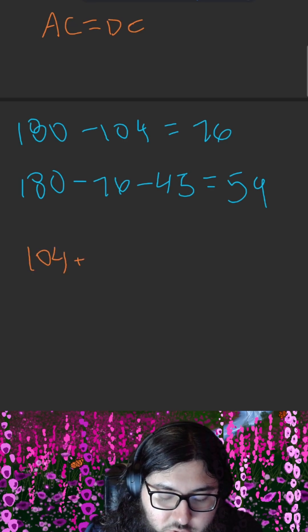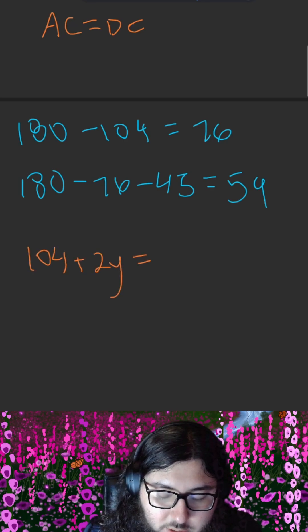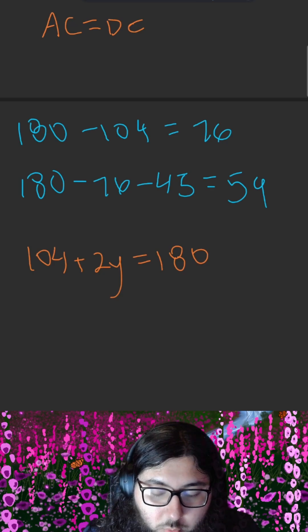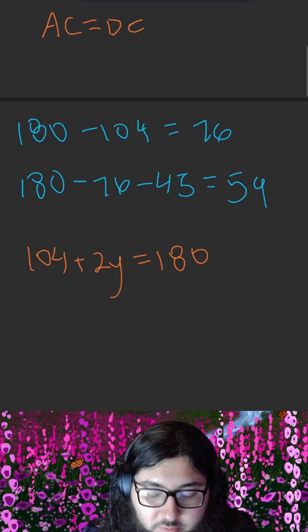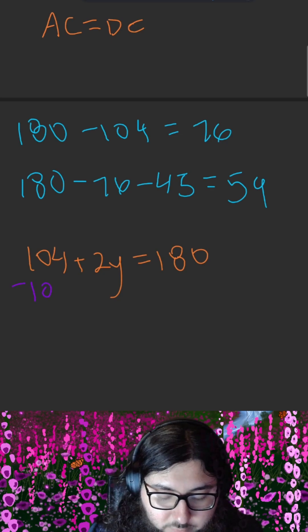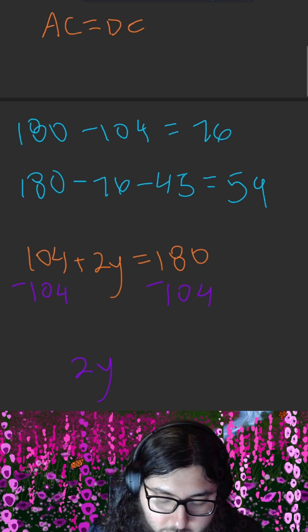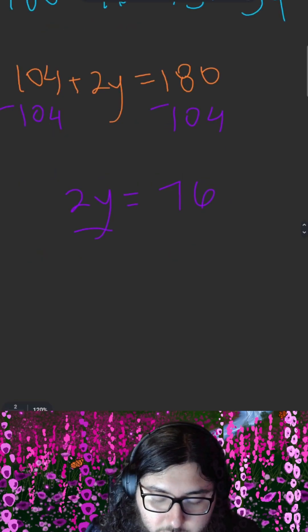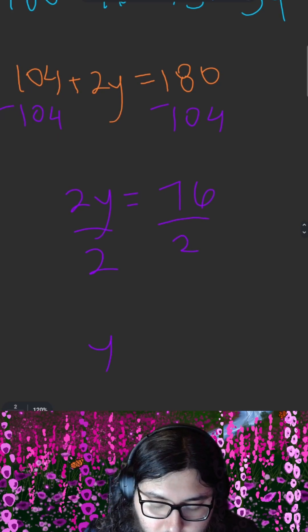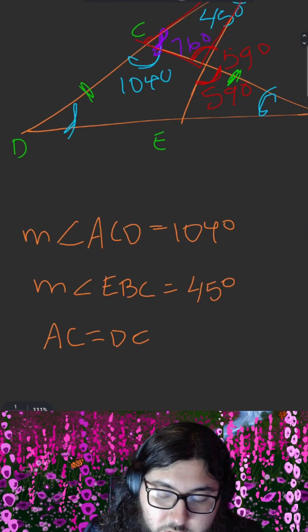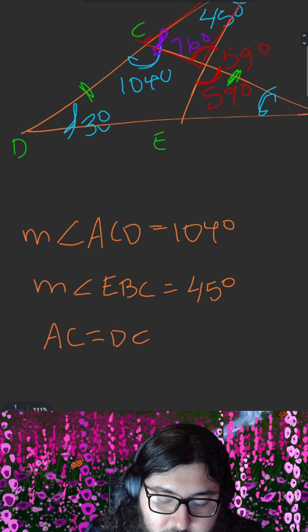Well, if we account for the fact that all angles in a triangle add up to 180, we can write this equation, where y represents the measure of just one of the angles, and we multiply it by 2 because there are two of them. Subtracting 104 from both sides, we get 2y is equal to 76. Dividing by 2 on both sides gives us that y is equal to 38. So each of these blue angles is 38 degrees.